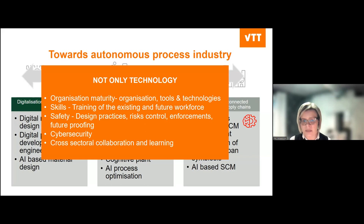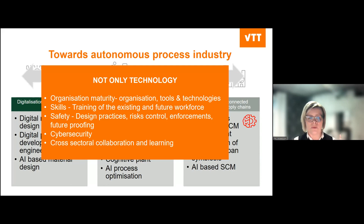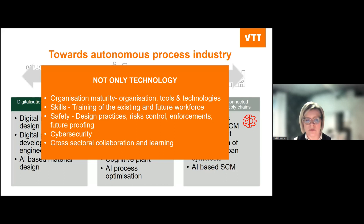A very important part is safety. We have to think about safety in two ways — AI may raise some safety concerns because we need to trust AI and we need explainable decisions. But we can also use AI for improving safety. We need to develop design practices, risk control, enforcement, and future proofing. Cybersecurity is also very important. We also need cross-sectorial collaboration and learning from other domain areas, for example ICT and from the academic and AI side. This is not only a technological question.